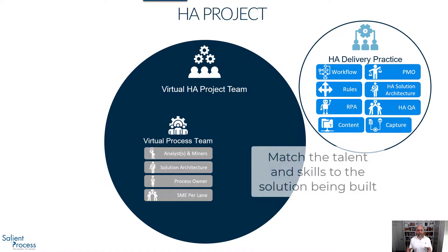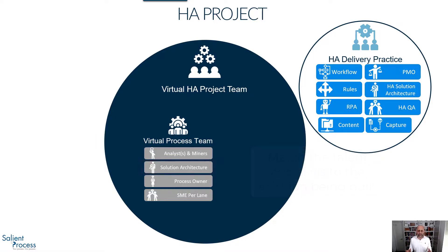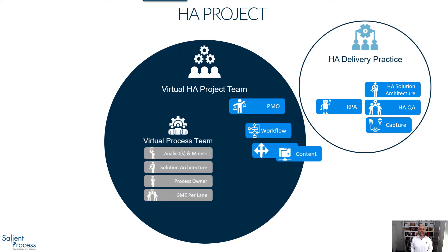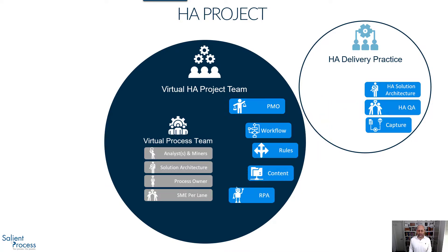From the delivery practice, we grab the talent relevant to the solution we're going to build. The solution architect drives the architecture and determines which components of the Digital Ops toolbox we're using, which in turn determines the specific skill sets needed for the project team. We'll always need project management. For this particular solution, maybe we need sequential workflow, automated decisions, content management, and a bunch of tasks to automate — so we'll need some RPA expertise as well. And of course, you're always going to need QA so you have a reliable and functioning solution. Now you've got your team built for this particular automation solution.